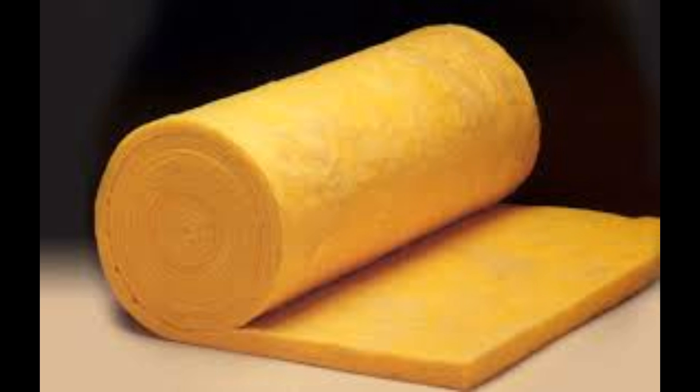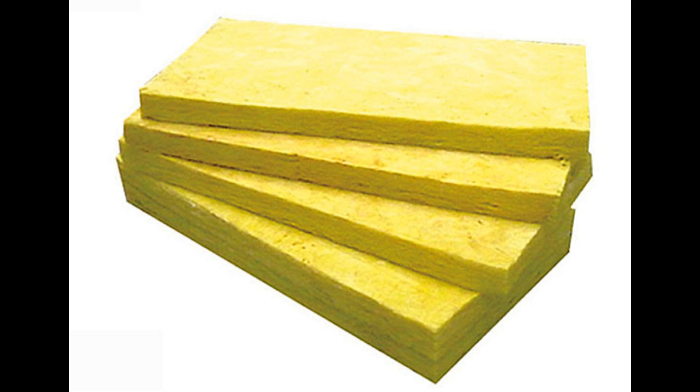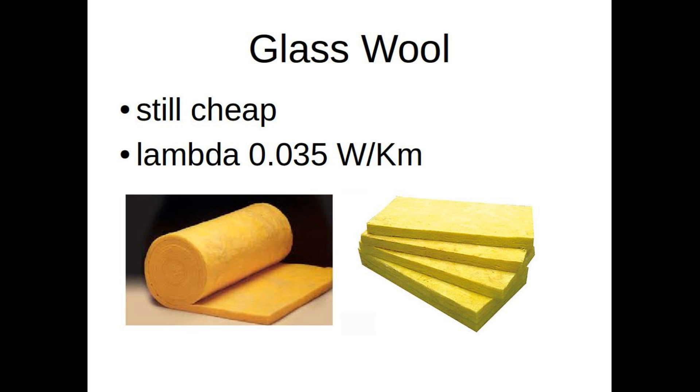Glass fiber or glass wool is also quite cheap. Saint-Gobain is one of the main suppliers in Europe. They have a product called Isover and it has really good insulation properties, not quite as good as polyurethane but still very good and it's also not very expensive.